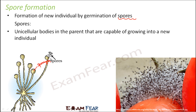Whenever these sporangia come in contact with a moist surface, the spores are released. Wherever they are released, from there they begin to grow. This is generally seen in organisms like algae, bacteria, and fungi. The spores are very small and tiny, so they get easily carried away by wind, water, or even by animals. That is how they grow and develop into new organisms in different regions, because they can get dispersed.